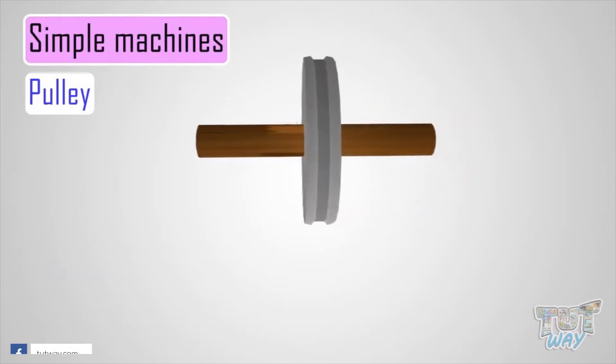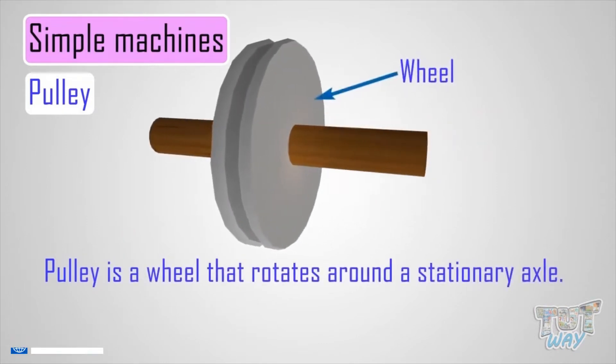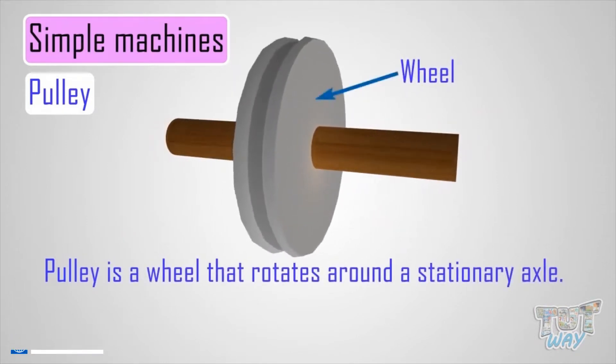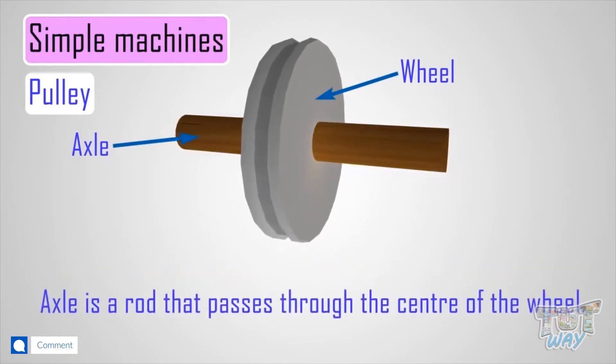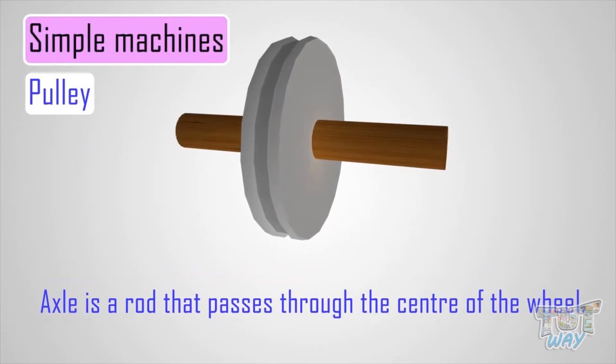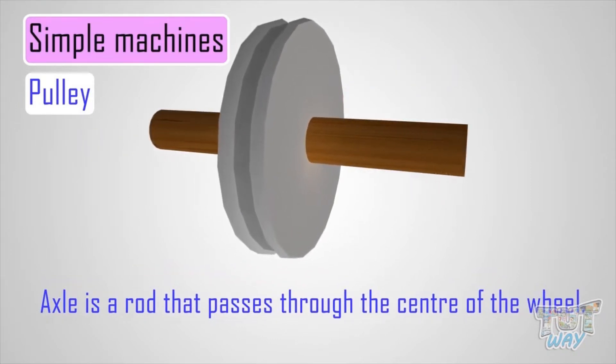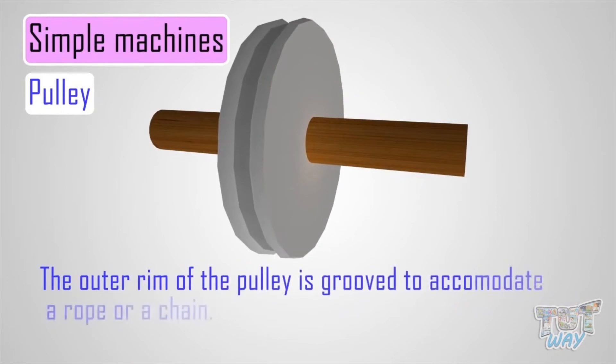A pulley is a wheel that rotates around a stationary axle, where the axle is a rod that passes through the center of the wheel. The outer rim of the pulley is grooved to accommodate a rope or chain.